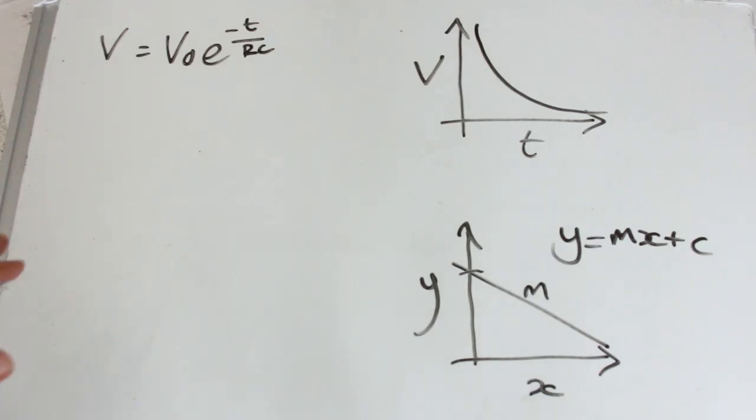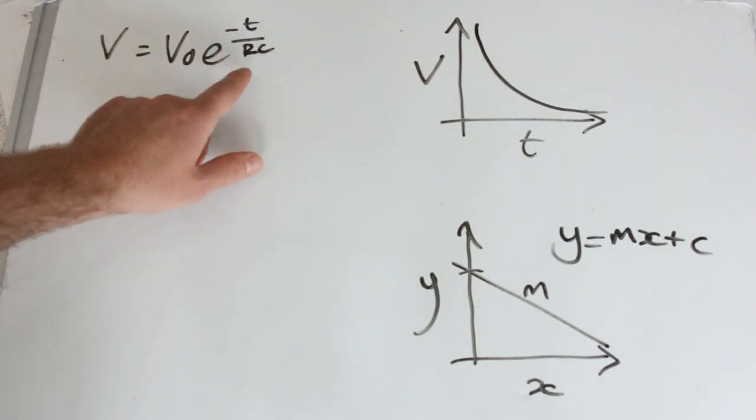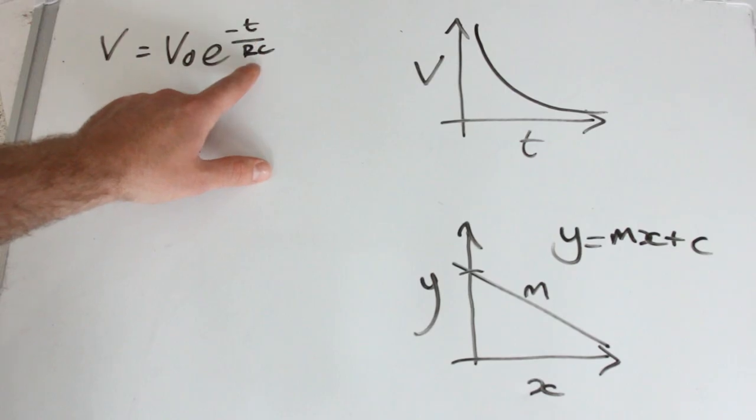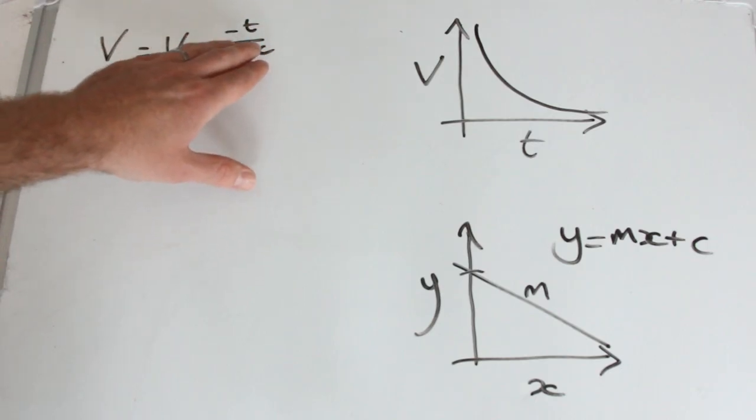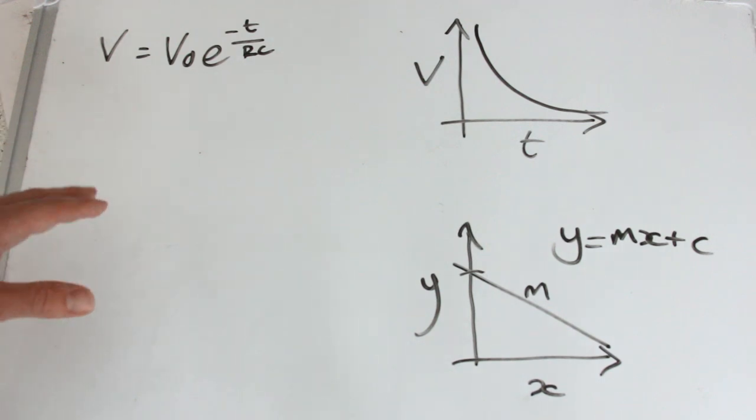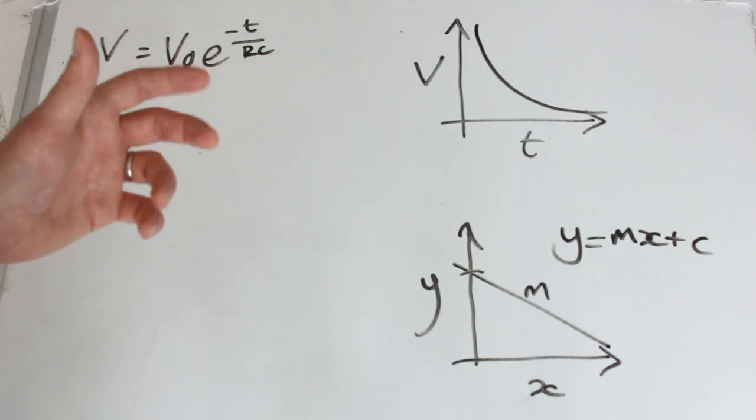So the hardest part is how do you kind of access this indice here. So e, the exponential number is raised to the power of minus t over RC, and we want to manipulate the equation so that t and RC are actually on the line of maths.